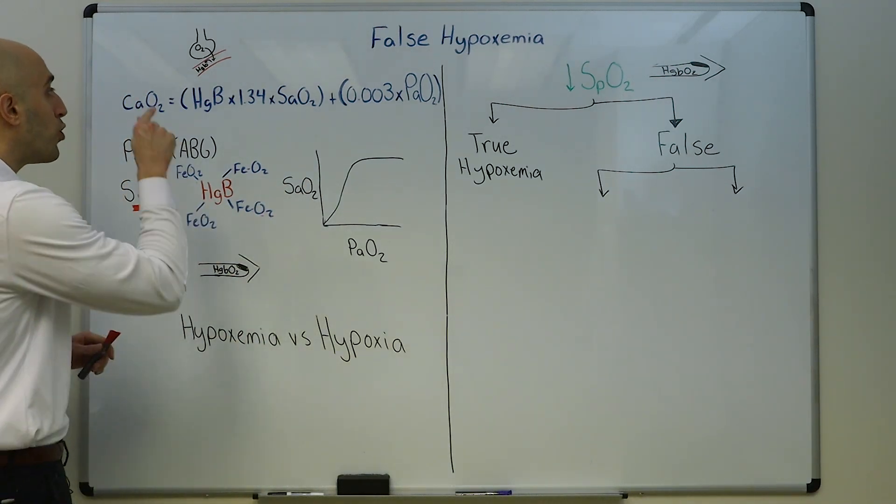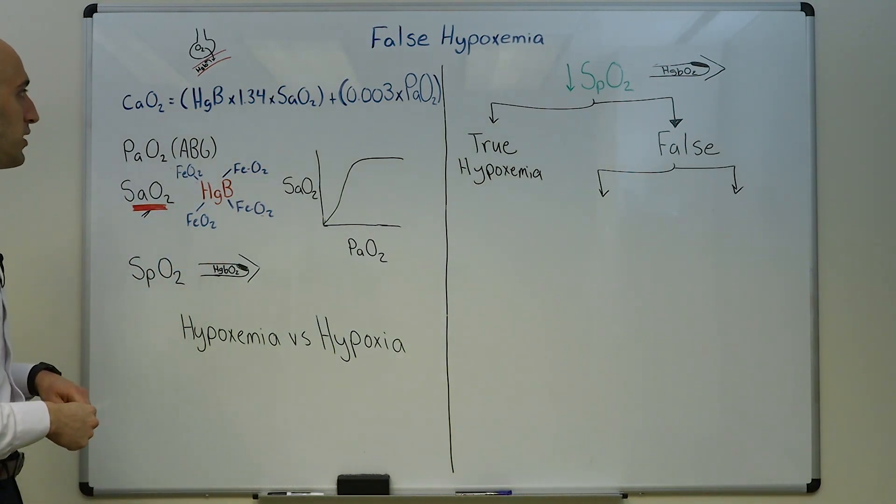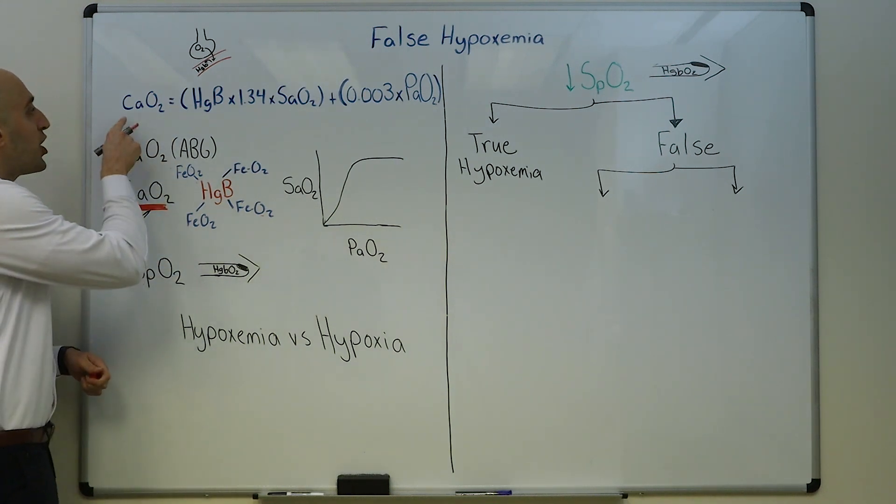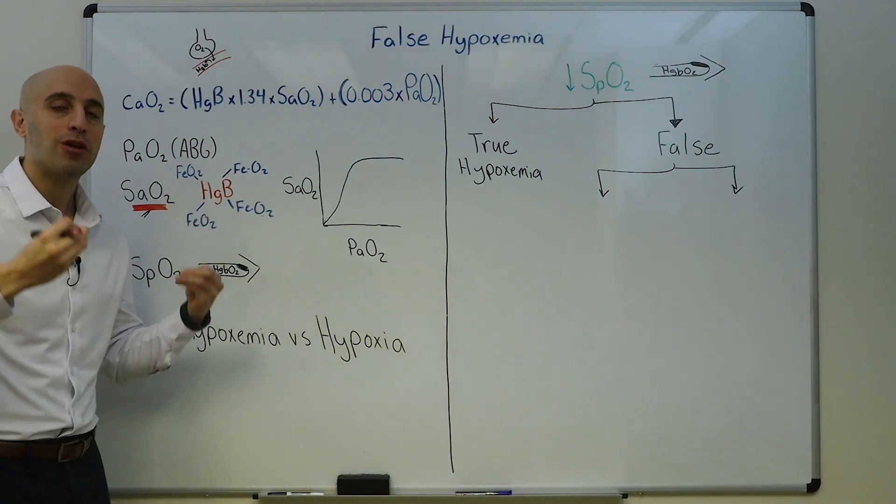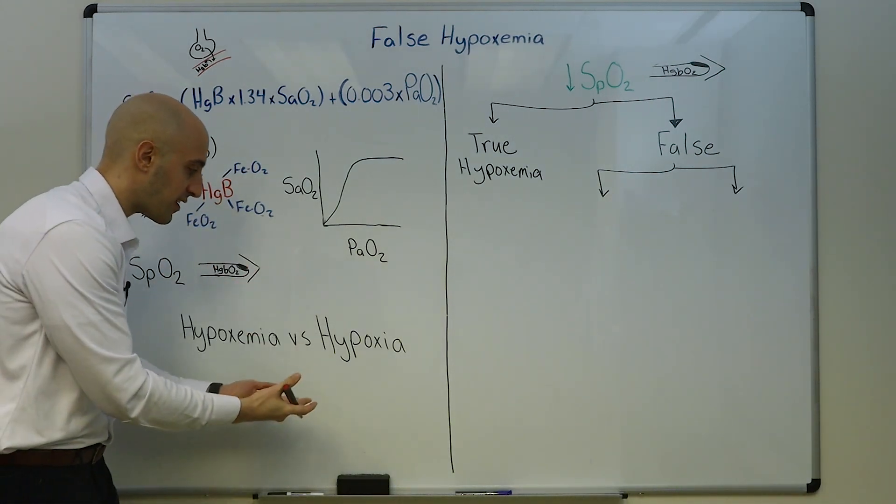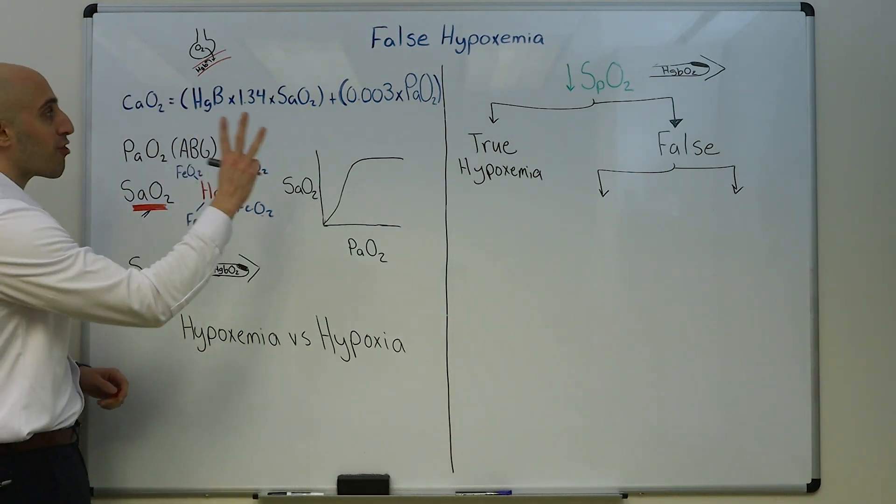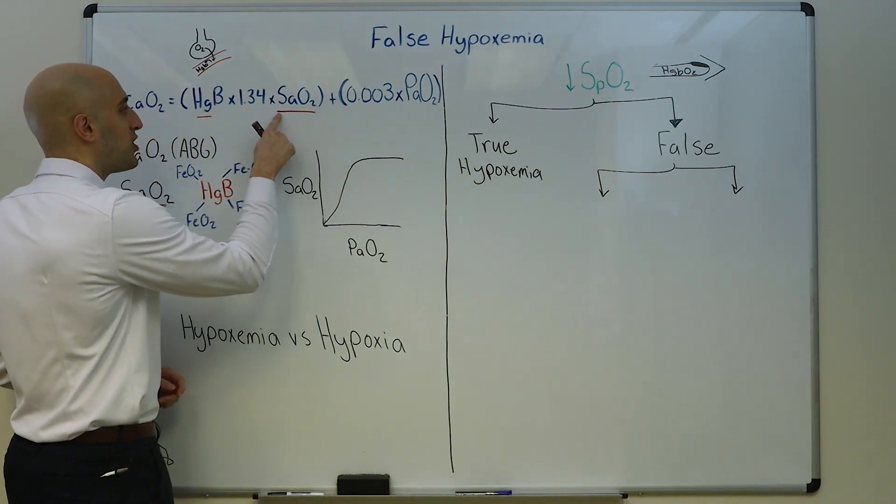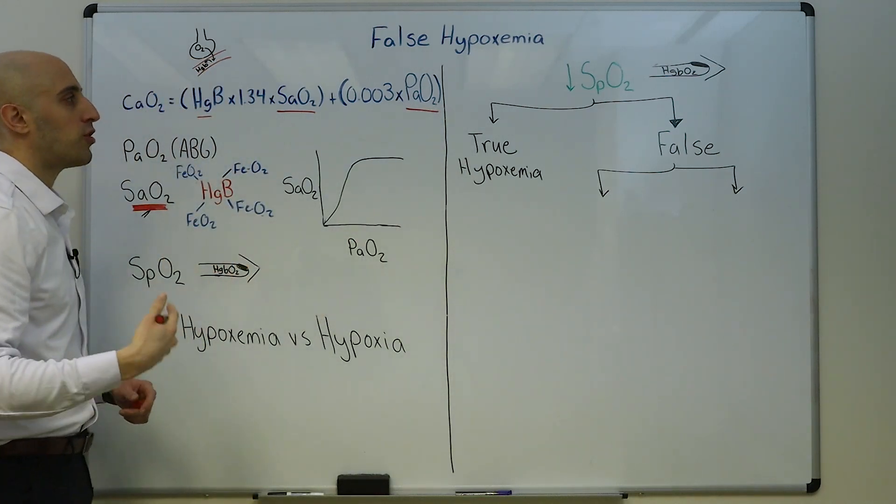I know when you look at this whiteboard it's quite intimidating. We have an equation, we have this oxygen hemoglobin dissociation curve, but don't be intimidated. We will go through each step and we will understand the physiology of oxygenation.